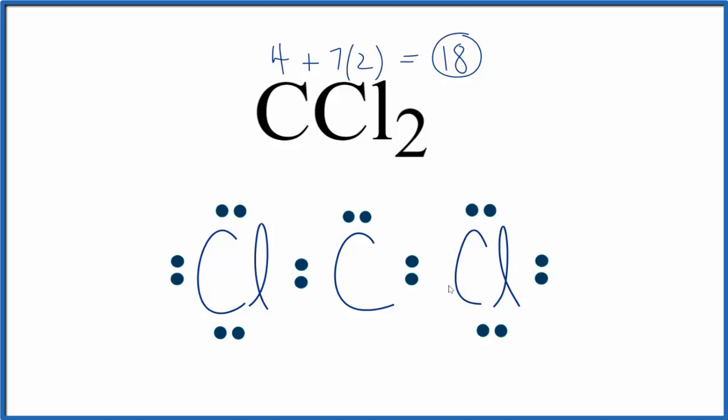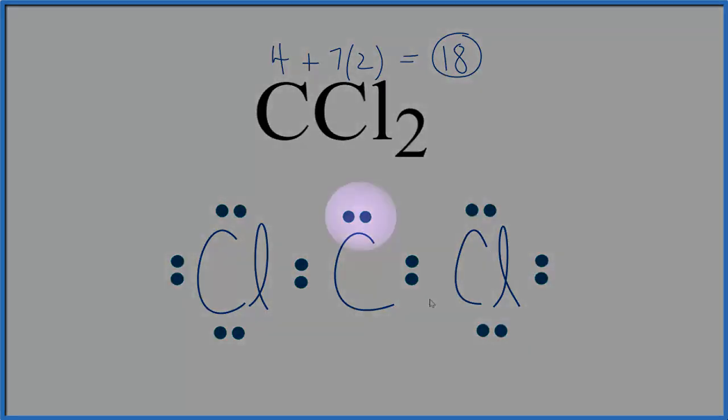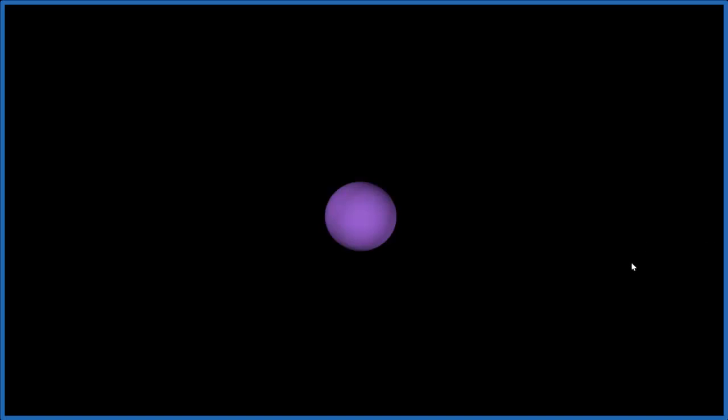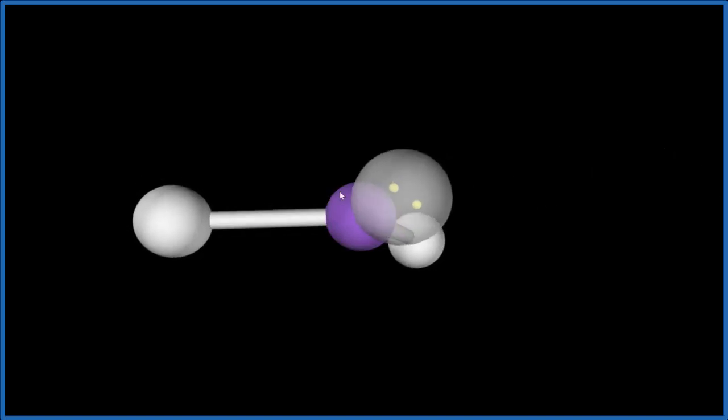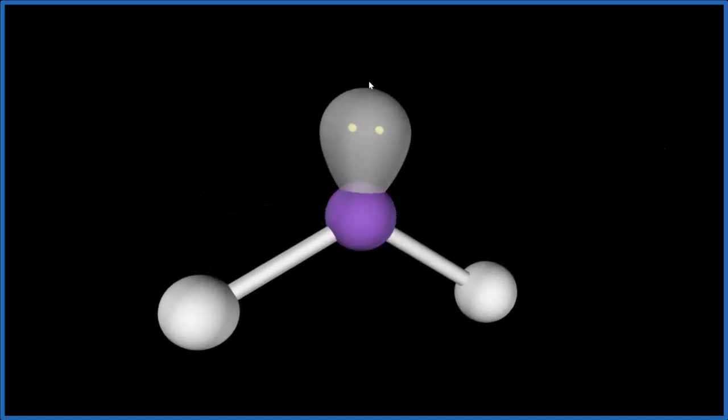Let's look at the molecular geometry to understand the shape of this molecule. The purple represents the carbon atom in the center. We'll add our two chlorines—they spread out to be as far away as possible. Then we add the lone pair, which pushes everything down, giving us a bent molecular geometry.